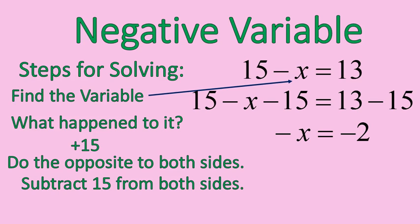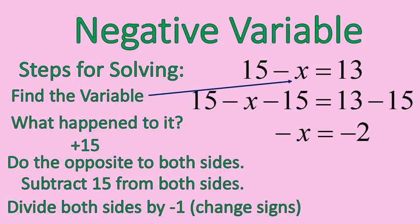Negative x equals negative 2. My next step is that I'm going to divide both sides by negative 1. Negative x times negative 1 gives me positive x. Negative 2 times negative 1 gives me positive 2. Look at that. Now we have a positive variable and a solution to our equation. x is equal to 2.